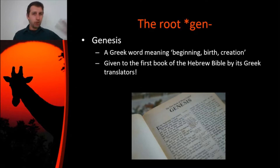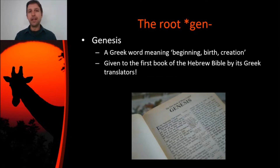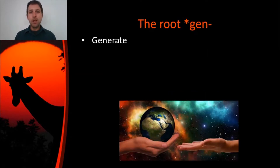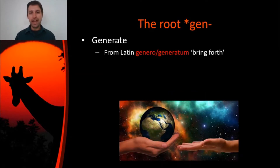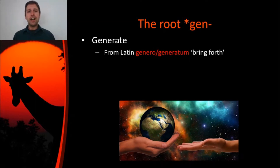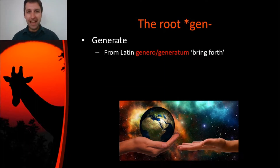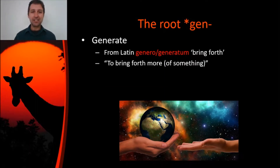So Genesis is a great place to start — it comes from the root Gen, and you can see Gen right there at the beginning of Genesis. We also get verbs like generate from the root Gen. Generate comes from the Latin verb genero, whose past participle was generatum, and this means to generate or to bring forth. You can see the root Gen in action there.